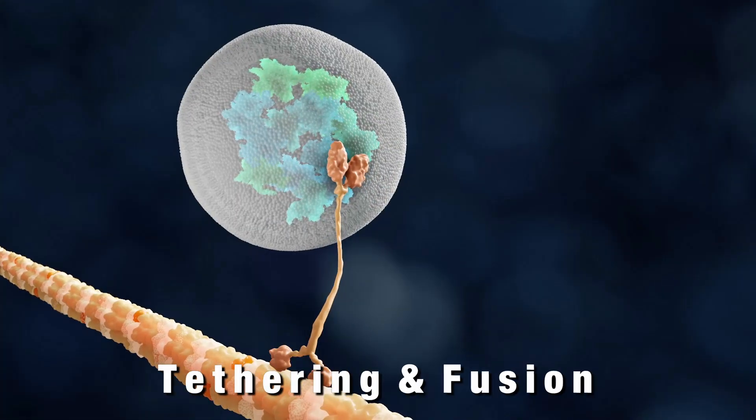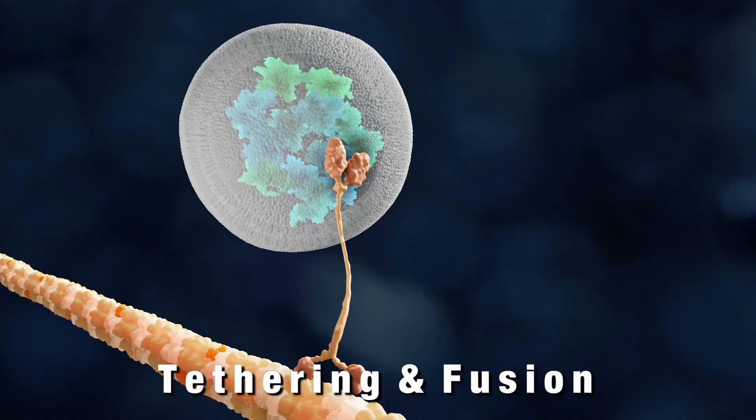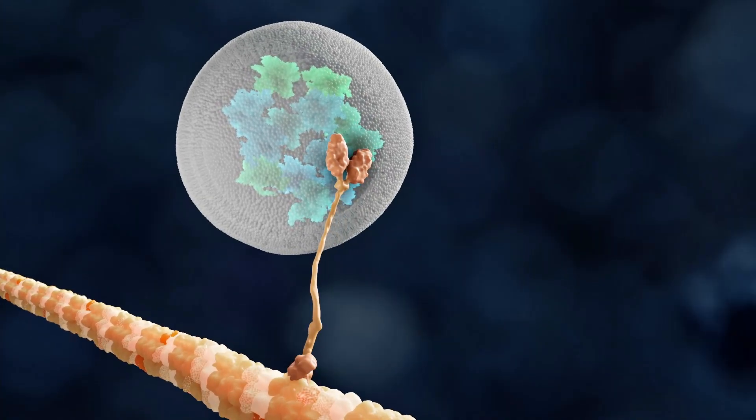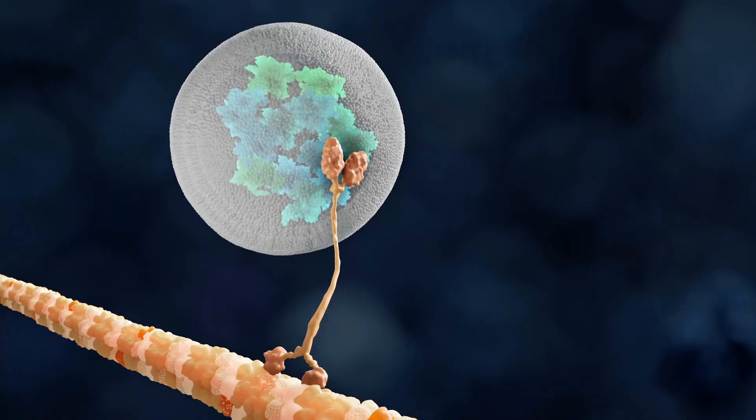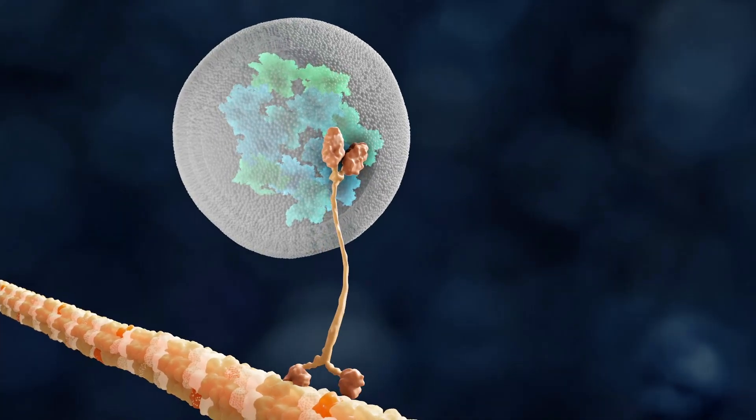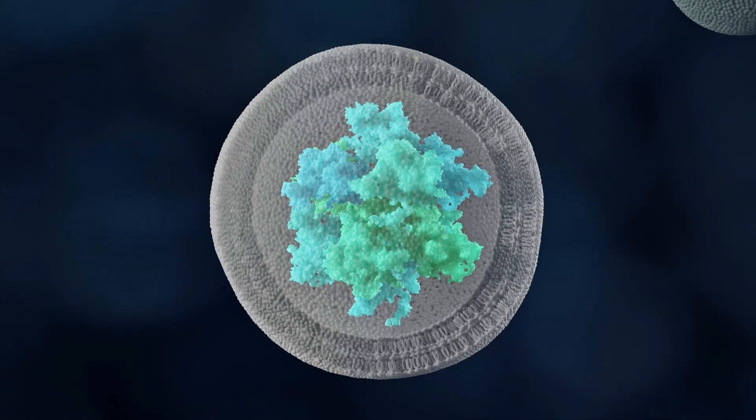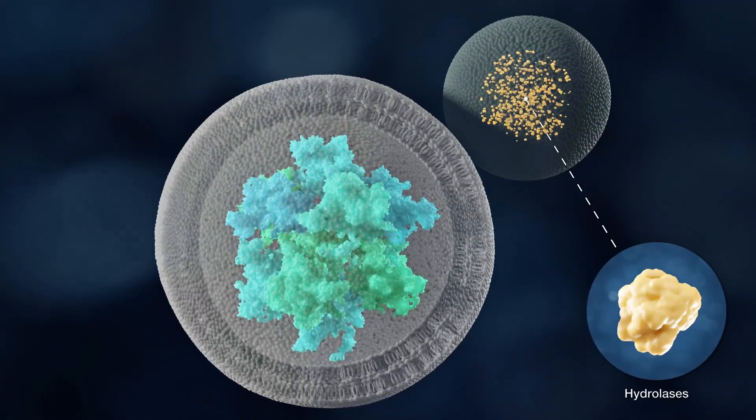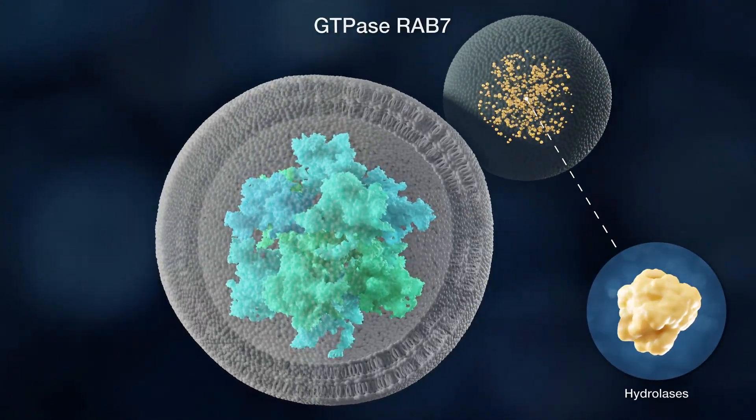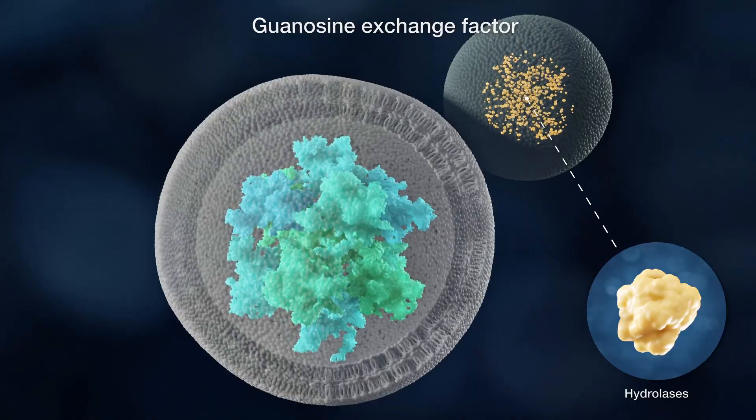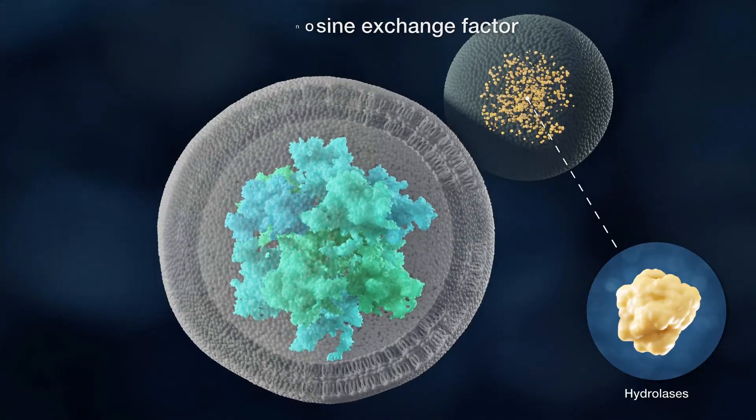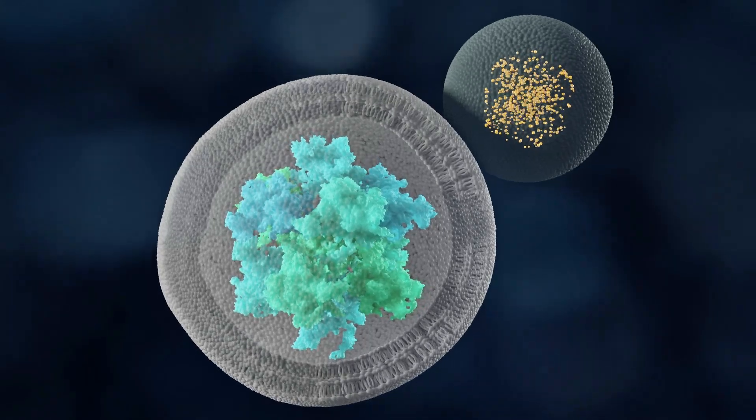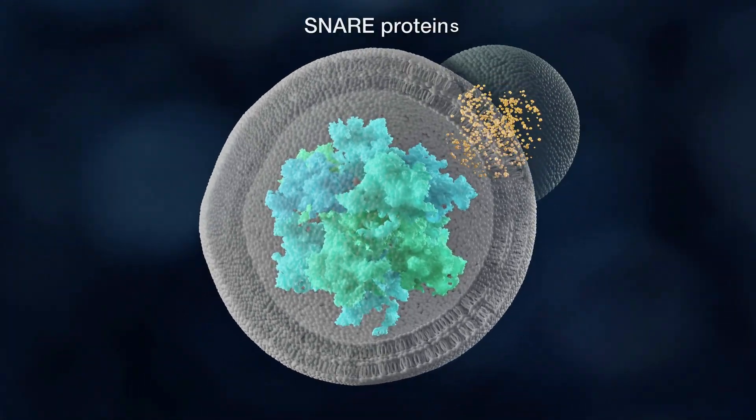For the tethering and fusion steps, motor proteins and microtubule tracts ensure the encounter of autophagosomes, first with late endosomes to form amphisomes and then lysosomes, or directly with lysosomes to generate autolysosomes. Tethering of autophagosomes with these compartments of the endolysosomal system is coordinated by the small GTPase Rab7, its guanosine exchange factor, its downstream effector HOPS complex, and additional tethering factors. The subsequent fusion is mediated by SNARE proteins.